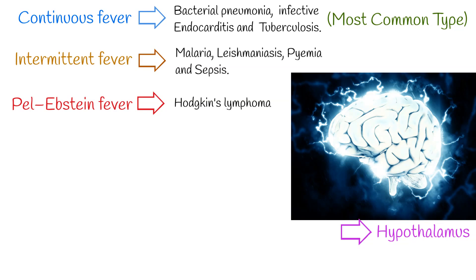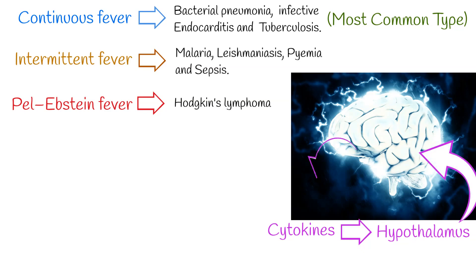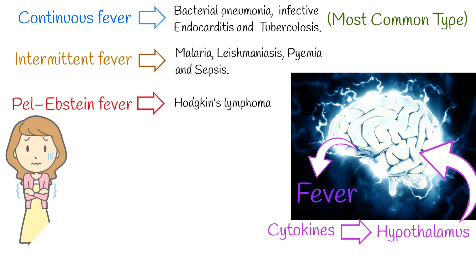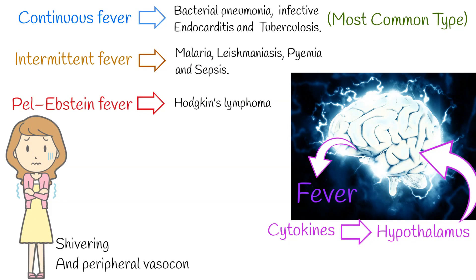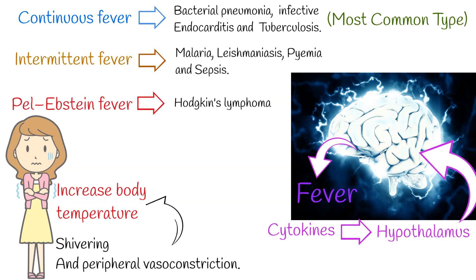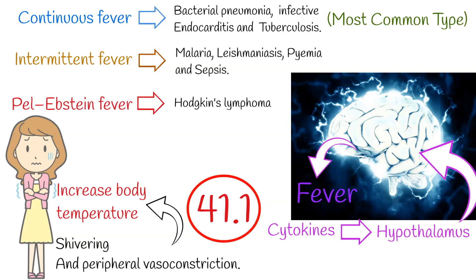Fever is regulated by the brain, specifically the hypothalamus. It senses pyrogenic cytokines and increases body temperature. There are two main ways to increase body temperature: elevation of body temperature by shivering, and decrease of heat loss by peripheral vasoconstriction. The high limit for body temperature is 41.1 degrees Celsius. Higher temperatures are rare if there is no structural damage of the hypothalamus.